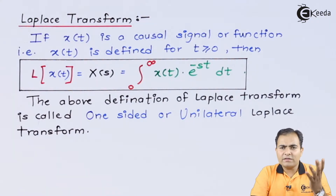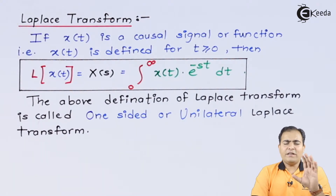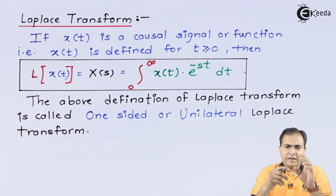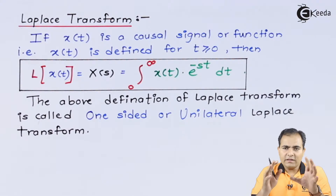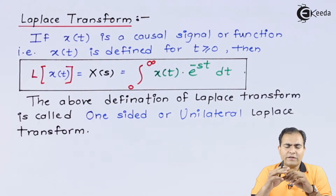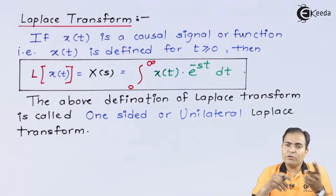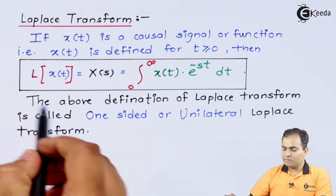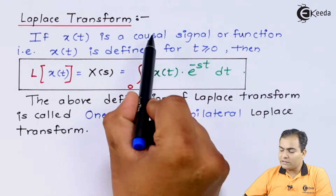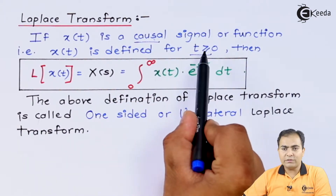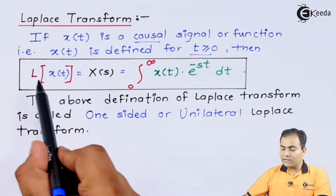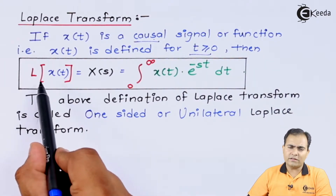The second definition of Laplace Transform applies if the function is causal. Causal means if the function is right-hand sided, or if the function's time period varies from 0 to infinity — that is, T is greater than or equal to 0 — then the function is referred to as a unilateral function. If the function is causal, it can be expressed or solved using Laplace Transform.